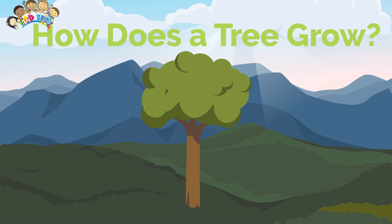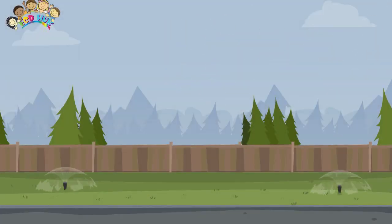How does a tree grow? A tree is a tall plant with a trunk and branches made of wood. Trees can live for many years. The oldest tree ever discovered is approximately 5,000 years old.